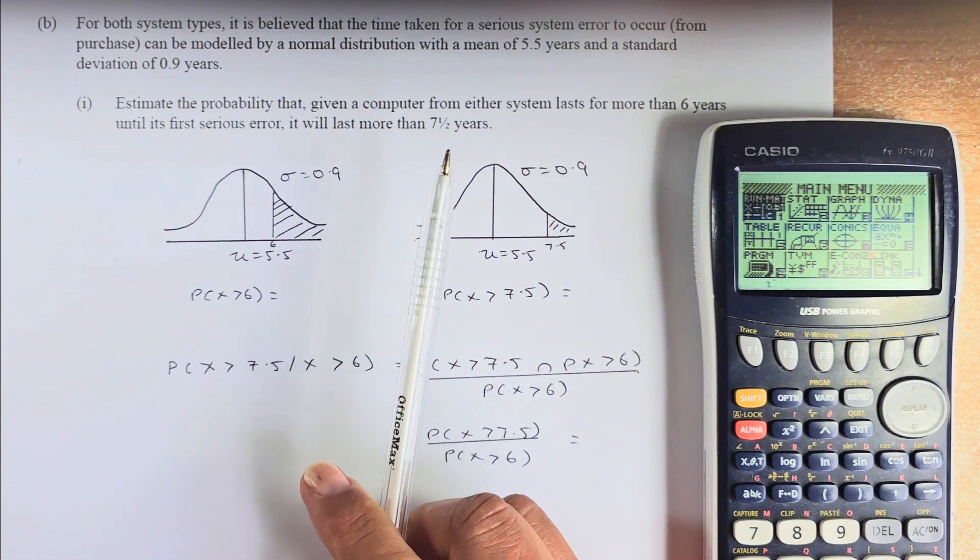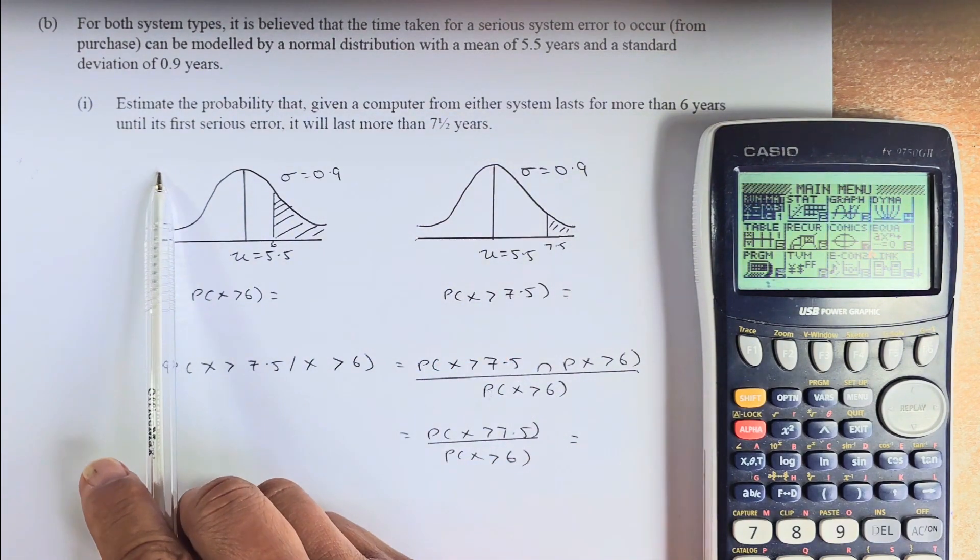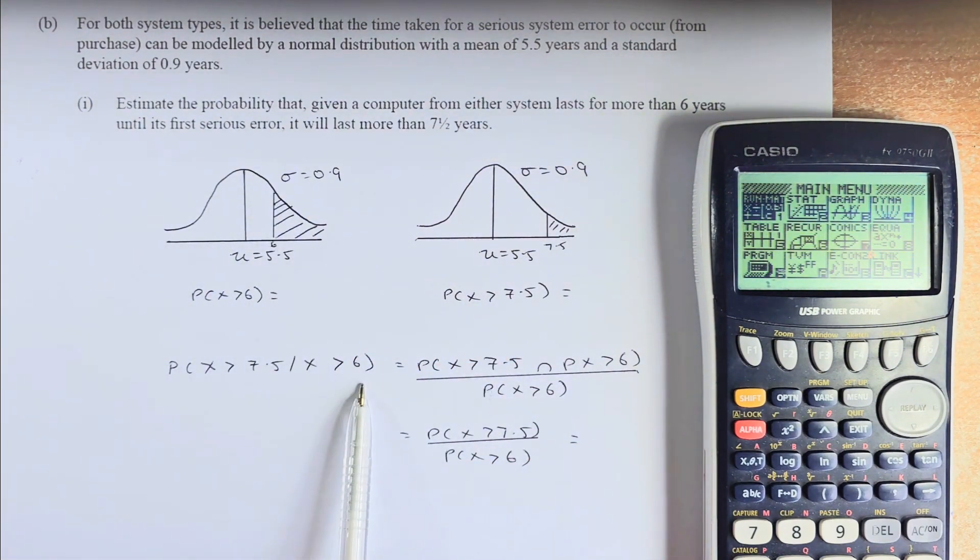So this is actually a conditional probability. The condition is lasts more than 6 years. What is the probability it lasts more than 7 years? So probability X greater than 7.5 given that X is greater than 6. That means you are going to calculate probability of A and B. So probability of X greater than 7.5 and X greater than 6 divided by probability of X greater than 6.